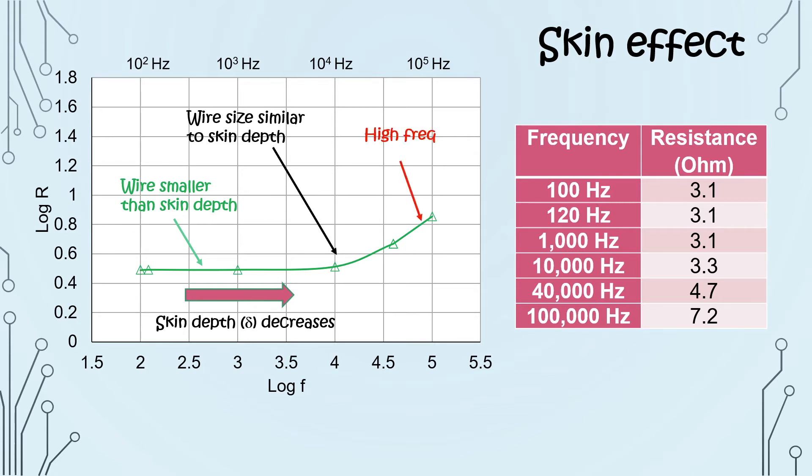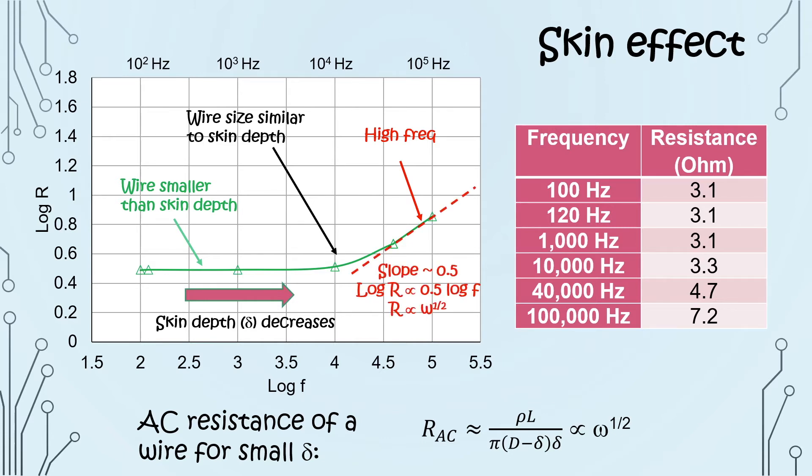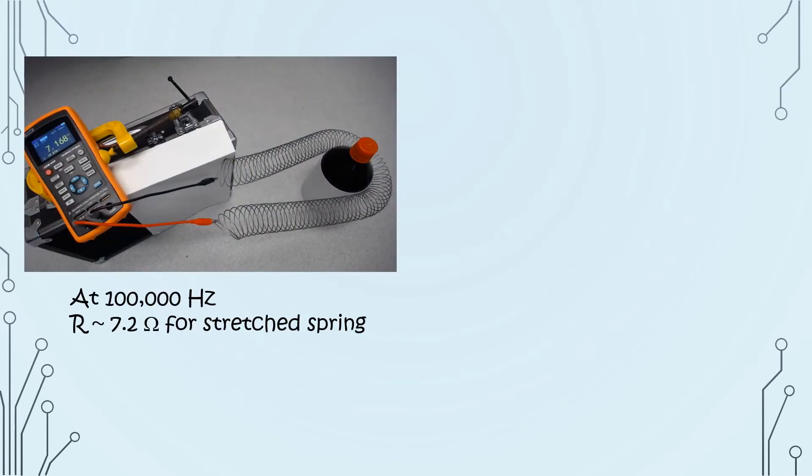At higher frequency, skin depth is small, and the AC resistance of the wire can be approximated to this, which is proportional to the square root of the frequency. We can see from the graph that at high frequency, the slope of the log-log plot is 0.5, which is consistent with the theory. In general, AC resistance is higher than DC because of the reduction of cross-sectional area for electricity conduction.